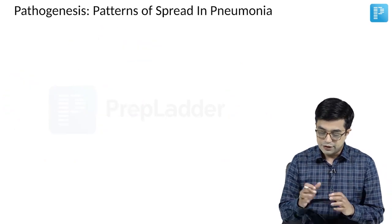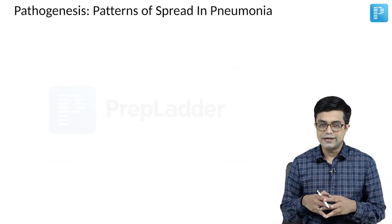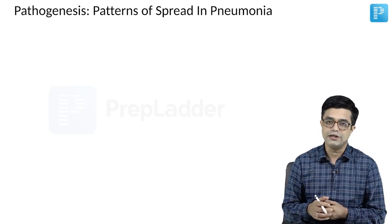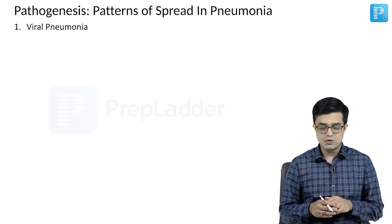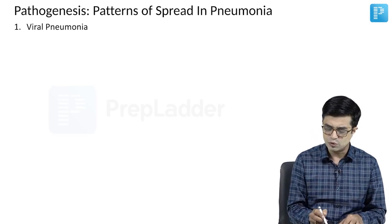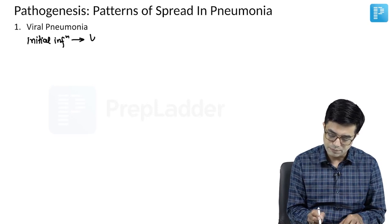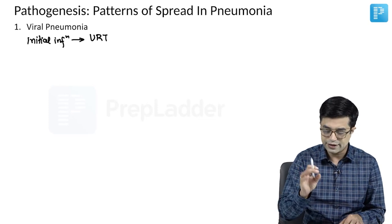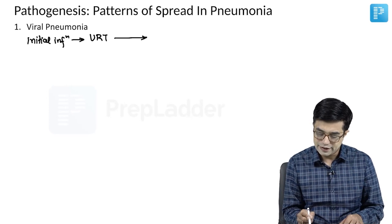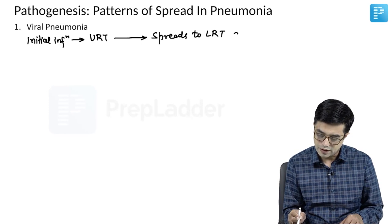What is the pattern of spread of pneumonia in various organisms? Nelson devotes almost two pages to this, so we need to understand the bare minimum points. First is viral pneumonia. In viral pneumonia, there is initial infection of the upper respiratory tract, and from there, infection spreads to the lower respiratory tract along the airway.